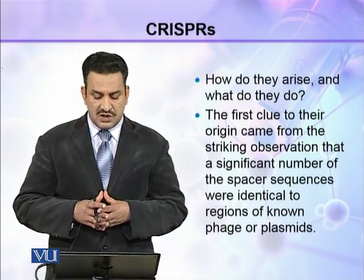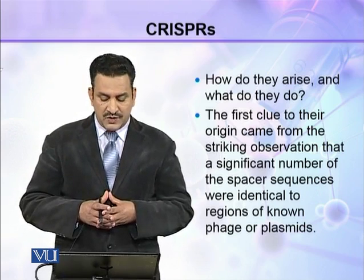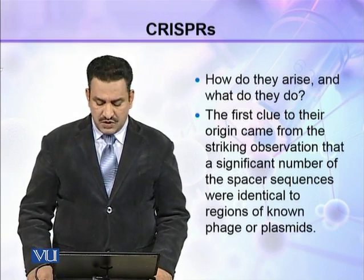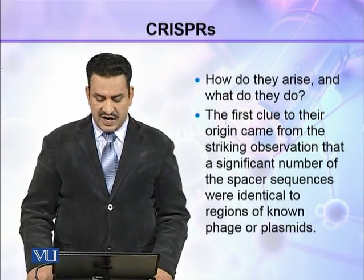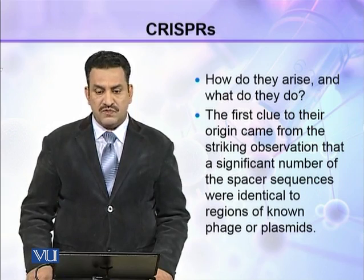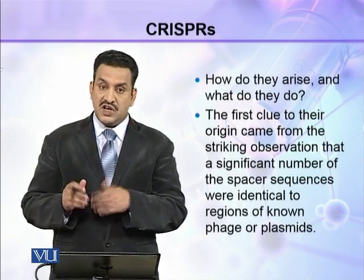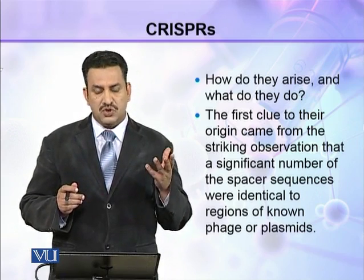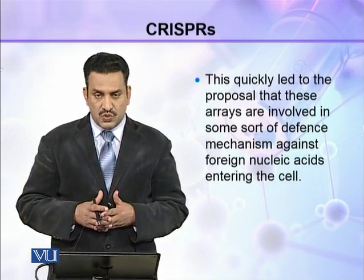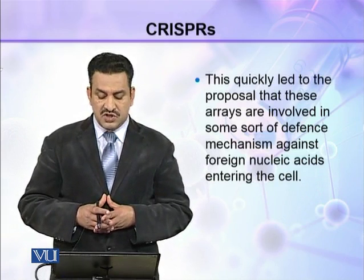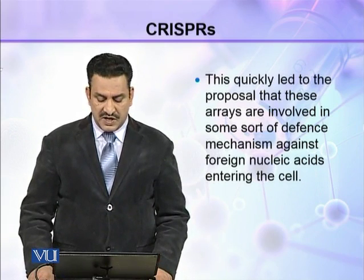The question arises: how do CRISPRs arise and what do they do? The first clue to their origin came from the striking observation that a significant number of the spacer sequences were identical to regions of known phages or plasmids, suggesting these sequences are similar to those found in known phages or plasmids.